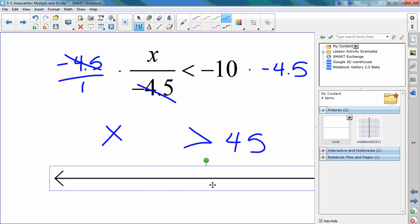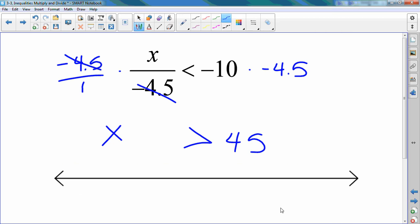Graph that inequality. Here's 0. Here's 45. Open dot or closed dot? Open. And arrow going to the right.